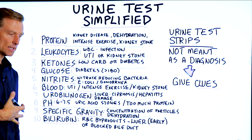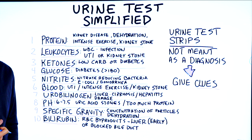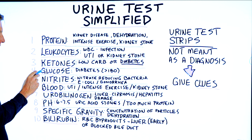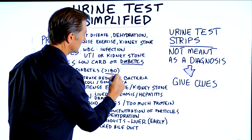Number three is ketones. If you are on a low-carb diet, then ketones will show up. But if you're not on a low-carb diet and you have ketones, that would mean you have diabetes. Then there's glucose — if glucose shows up in your urine, that means your blood sugars are over 180 milligrams per deciliter, which would also mean that you're diabetic.